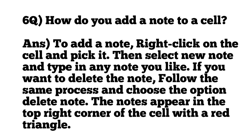How do you add a note to a cell? To add a note, right click on the cell and pick it. Then select new note and type in any note you like. If you want to delete the note, follow the same process and choose the option delete note. The note appears in the top right corner of the cell with a red triangle.